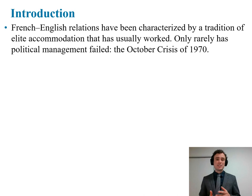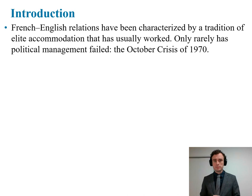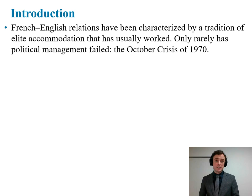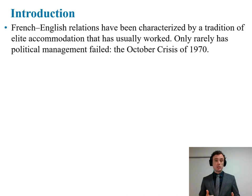The film discusses the elite accommodation in the ten years leading up to Confederation, focusing on three political figures: Macdonald, Cartier, and the conservative politician and founder of the Toronto Globe, George Brown. From Confederation to the present day, this practice of elite accommodation has usually worked to resolve issues between French and English Canadians. The most notable failure was the October Crisis of 1970, also known as the FLQ crisis, when a radical separatist Québécois group kidnapped prominent politicians, resulting in the declaration of martial law.